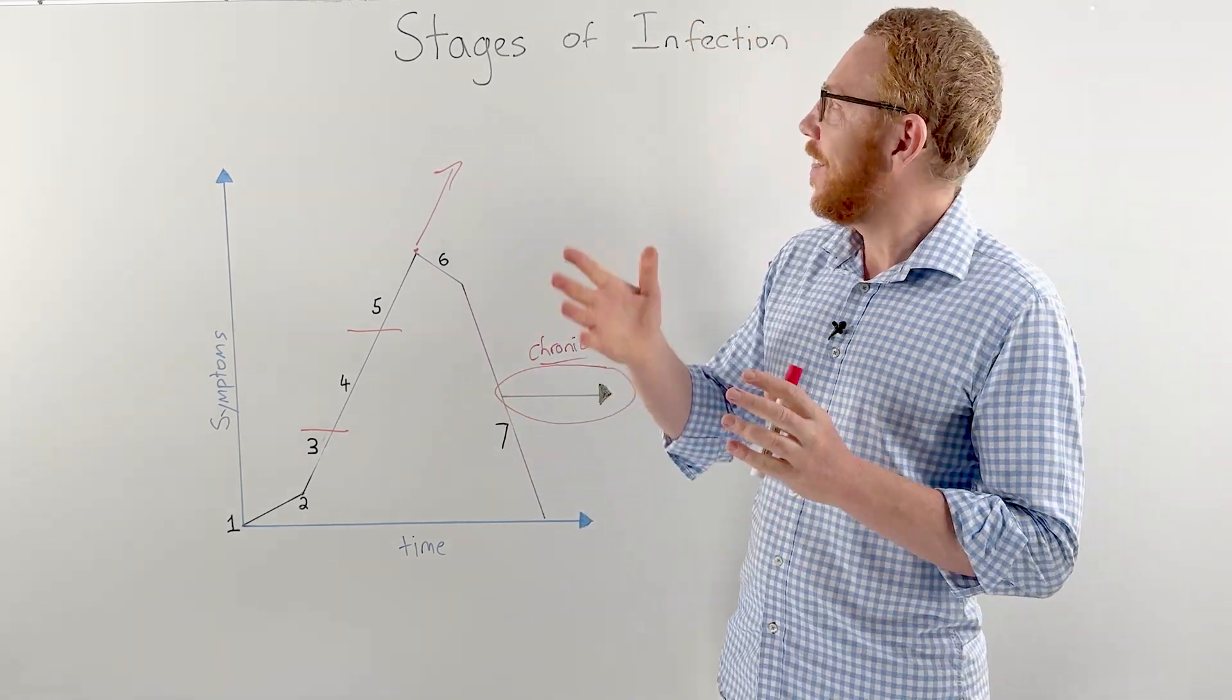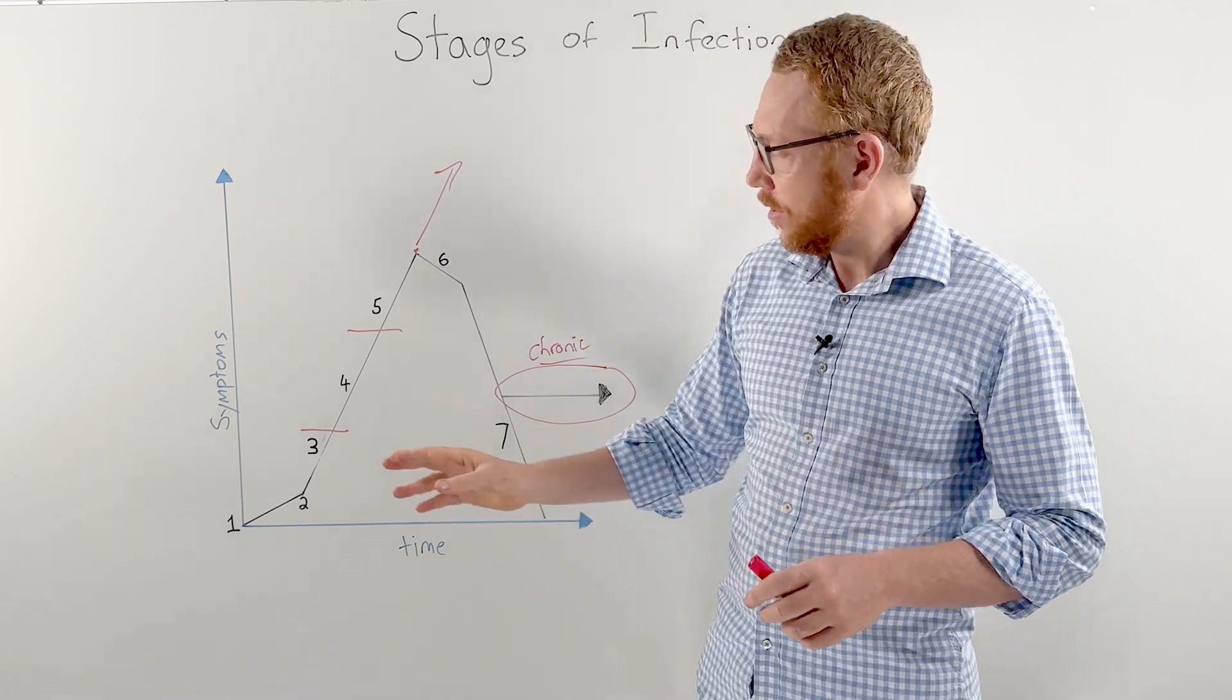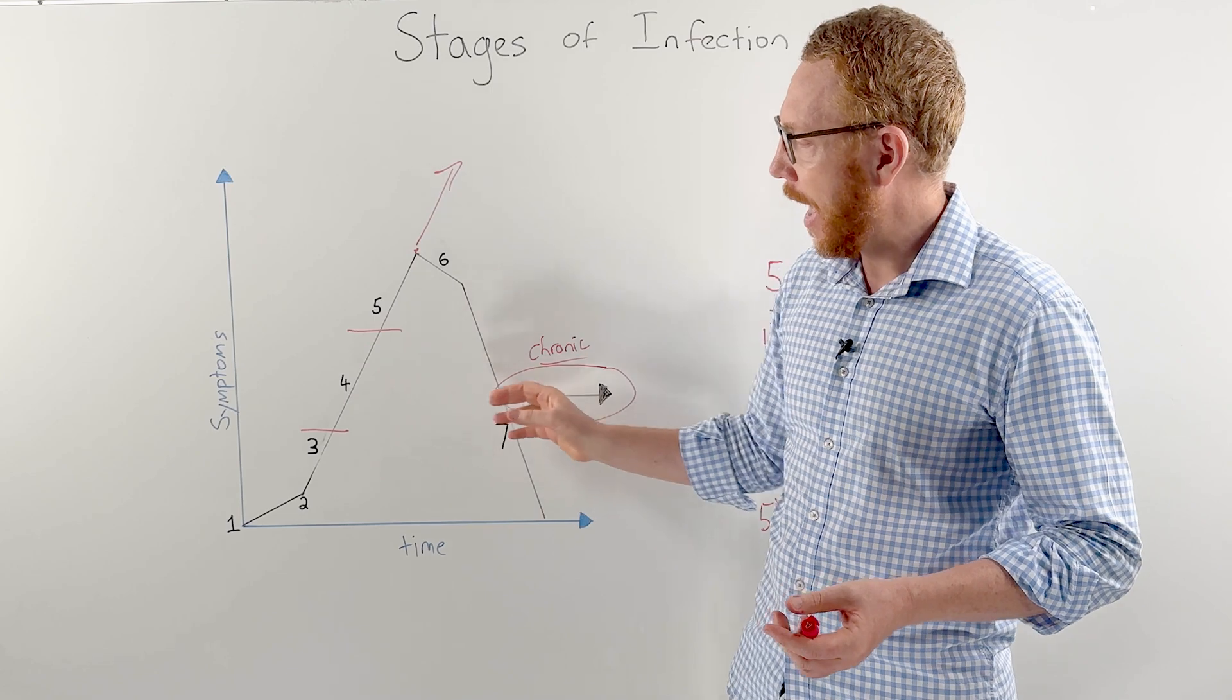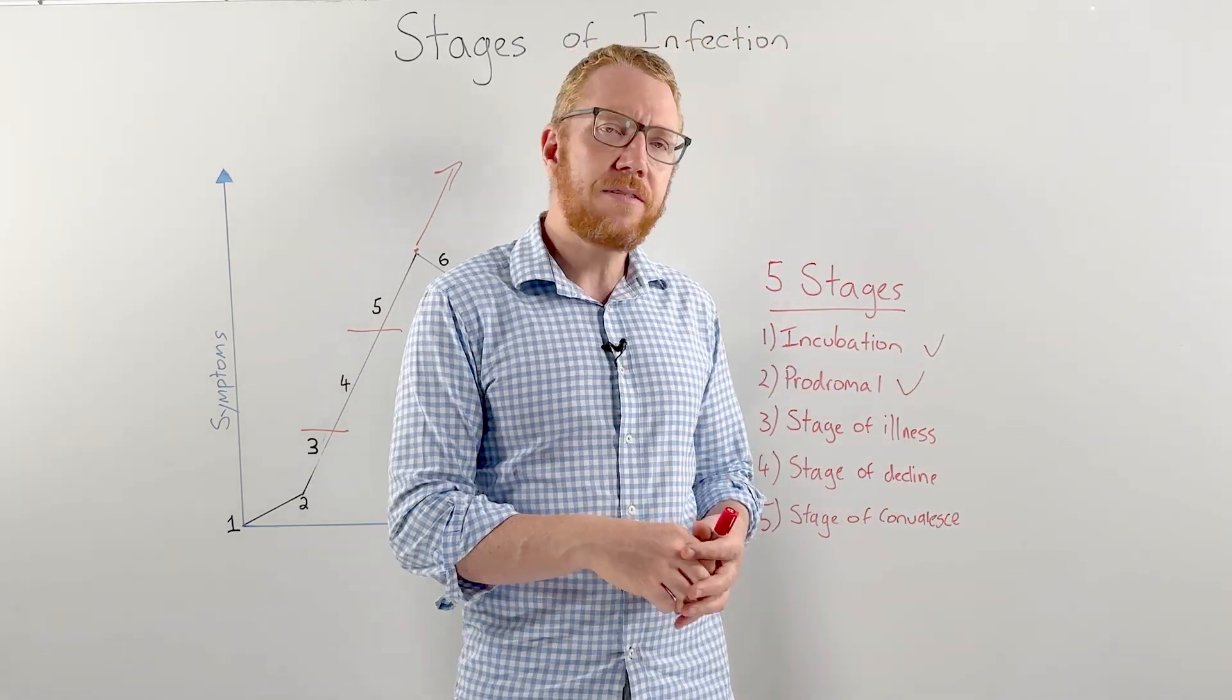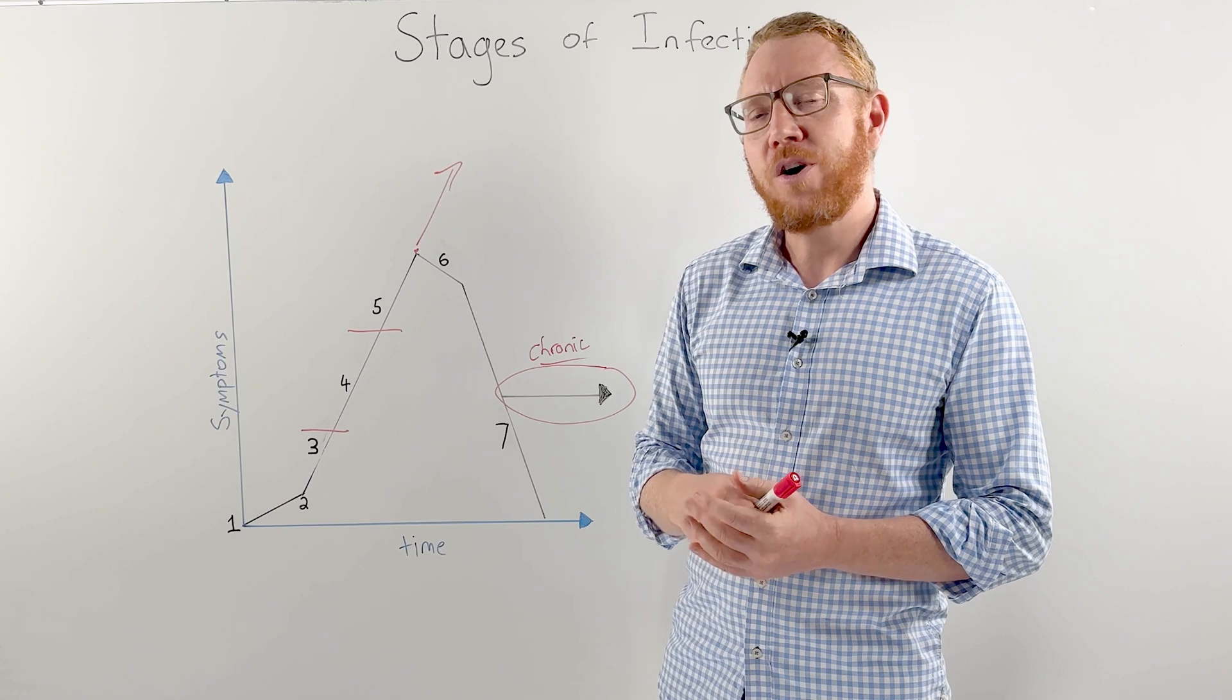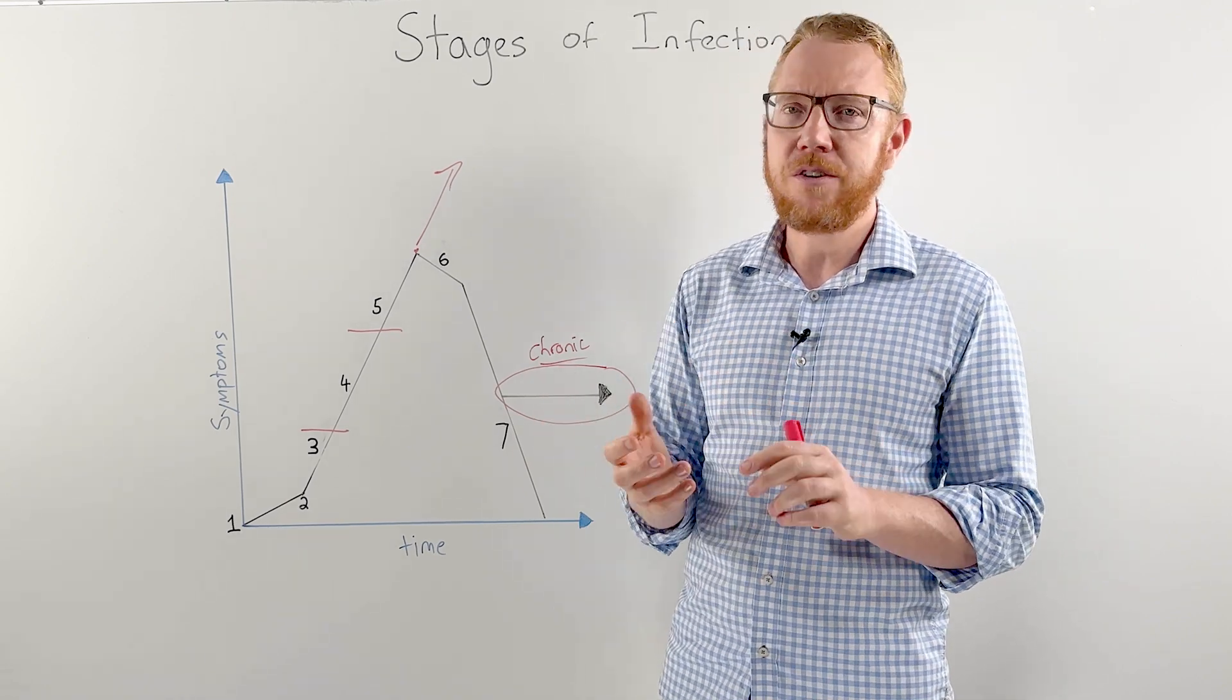So there we have it. That's the stages of infection. We've gone through the seven steps of what pathophysiologically happens in the body, how they correspond to the five stages, and I've given you two examples, influenza and norovirus, to show you how they can be same but also different.